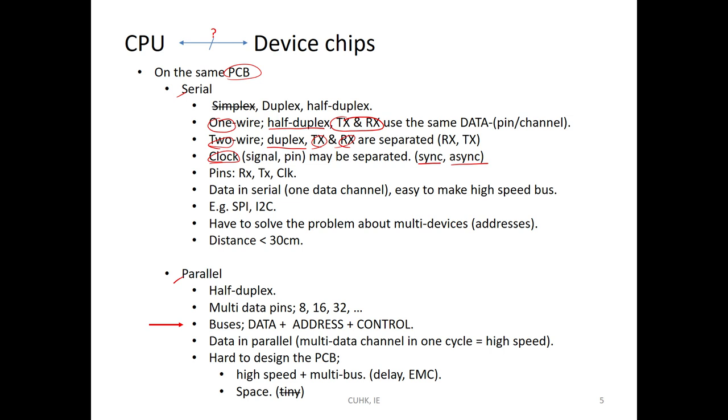For serial communication, you can find the pins that may be named TX, RX, and CLK. Because they use one data channel, it is easy to make high-speed communication in serial. Some standards we use for serial communication on the board are called SPI or I2C. They come from different companies. One is from Motorola and one is from Philips. SPI is two-wire communication. I2C is one-wire communication. Another problem is addressing how the CPU communicates to multiple devices. On the PCB, the distance is very short, less than half meter.